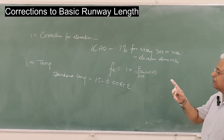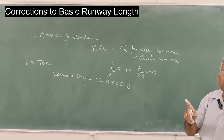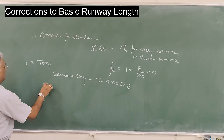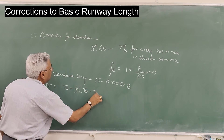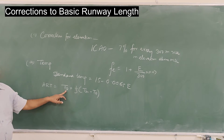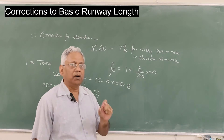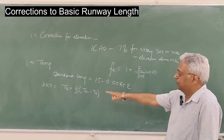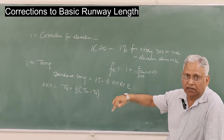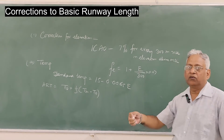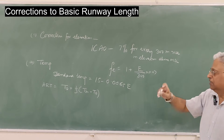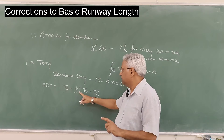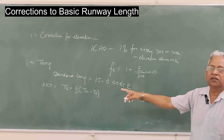Here we define what is called the Airport Reference Temperature (ART). Airport Reference Temperature is taken as TA plus one-third of (TM minus TA), where TA is the average daily temperature for the hottest month of the year, and TM is the maximum daily temperature for the hottest month of the year. So we consider the hottest month — for example, June for the northern part of the country. In the month of June, what is the average daily temperature for the entire month and what is the maximum daily temperature? That defines the Airport Reference Temperature.